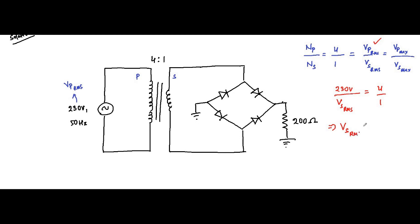From the turns ratio, the secondary winding RMS voltage equals 230 divided by 4, which is 57.5 volts. This is a very important value — the RMS voltage across the secondary winding is 57.5 volts.